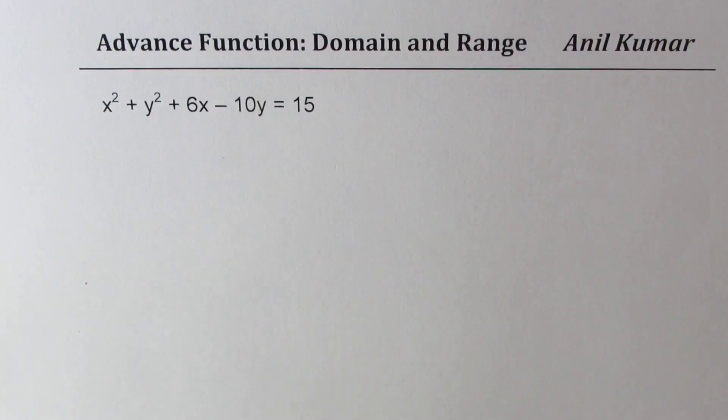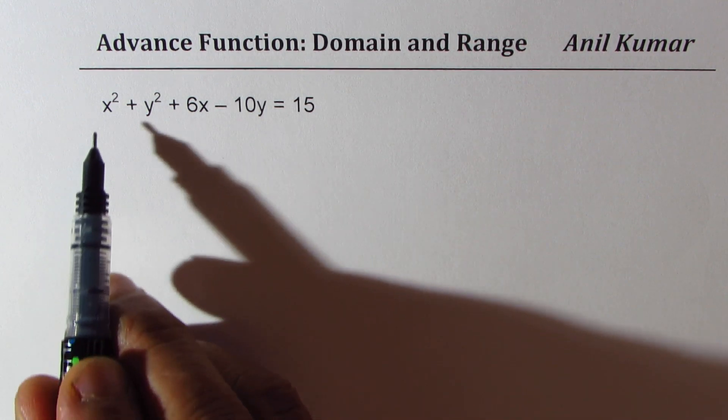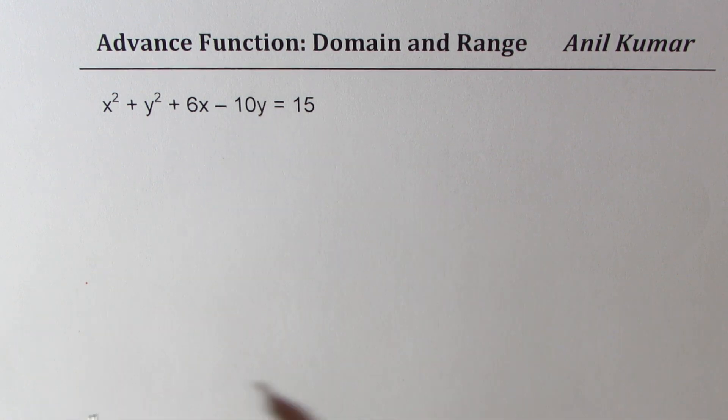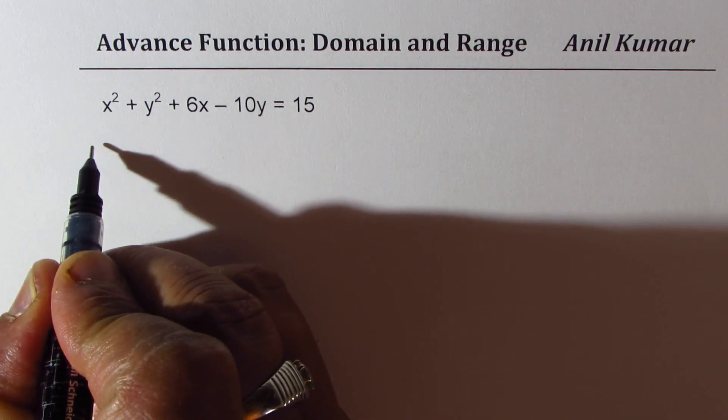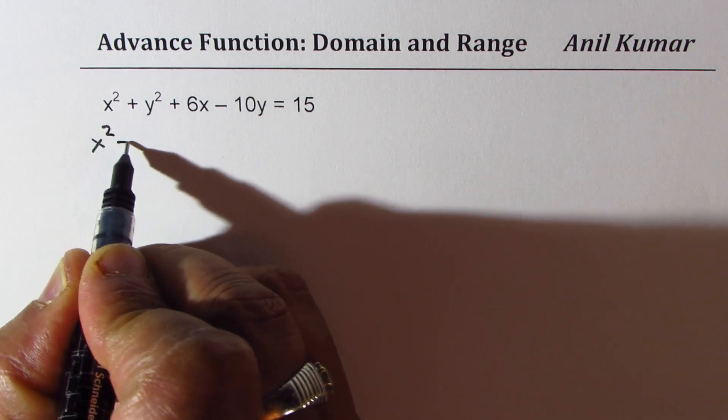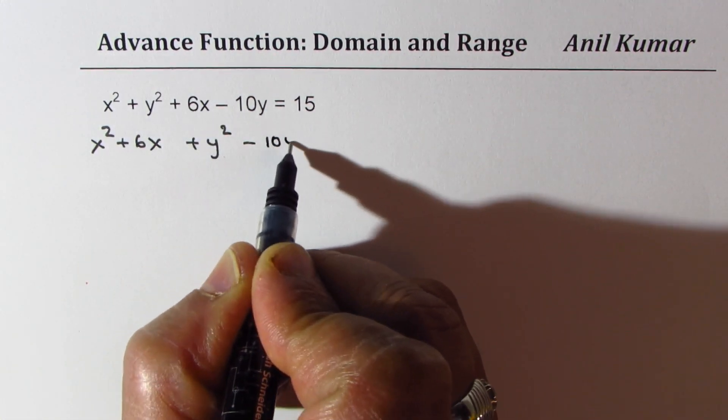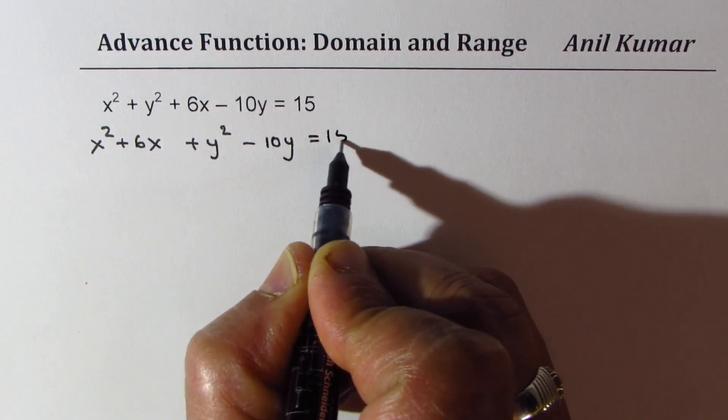So let's begin by completing squares to find the center. So it's the same equation x square plus y square plus 6x minus 10y equals to 15. Let's rearrange. We could write this as x square plus 6x and we have plus y square minus 10y equals to 15.